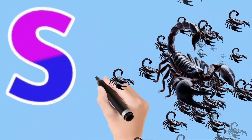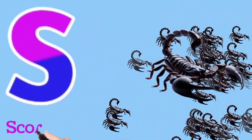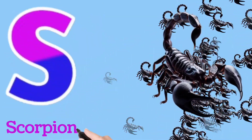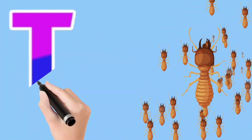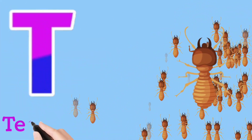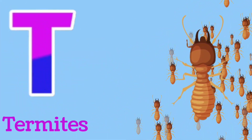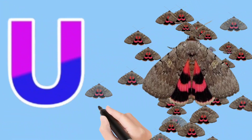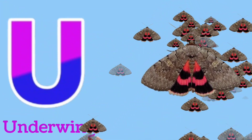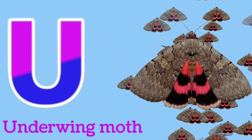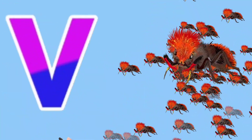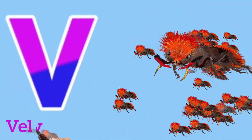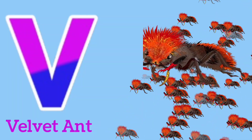R for rhino beetle. S for scorpion. T for termites. U for underwing moth.